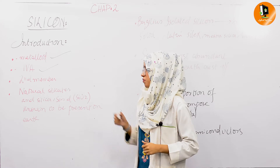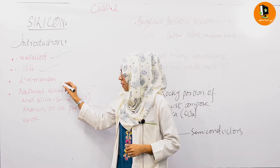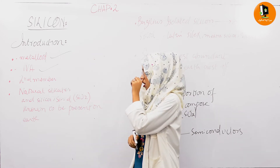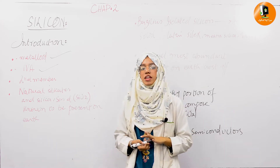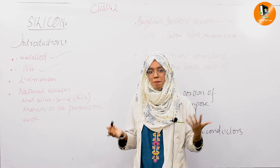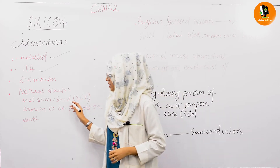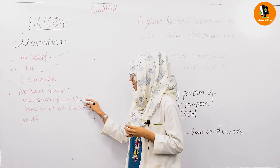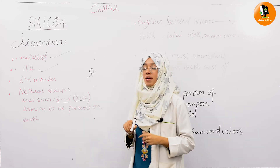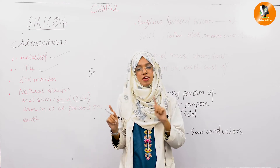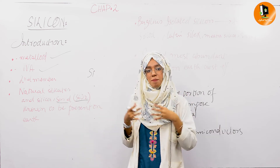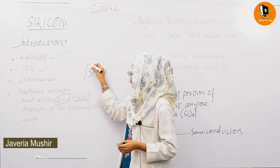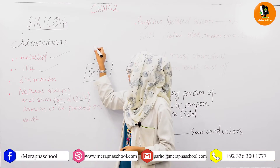Silicon belongs to the same group as carbon — Group 4A — and it is the second member after carbon in that group. Now, silica is basically sand, whose formula is SiO2. Silicon is the element Si, but it does not occur in its free state. Most of the time it occurs in its combined state, in the form of silica (SiO2). So its most evident occurrence is as this compound, not in a free state.